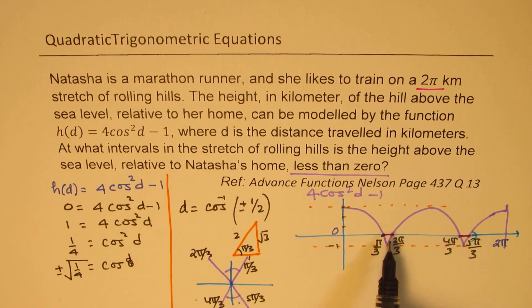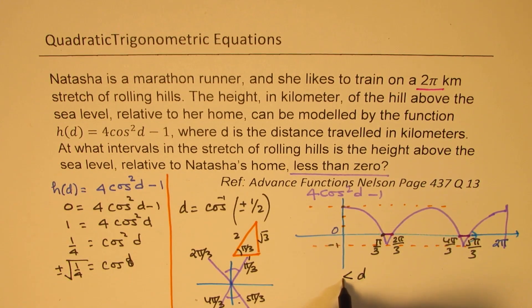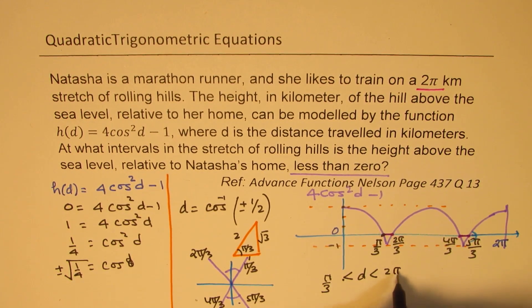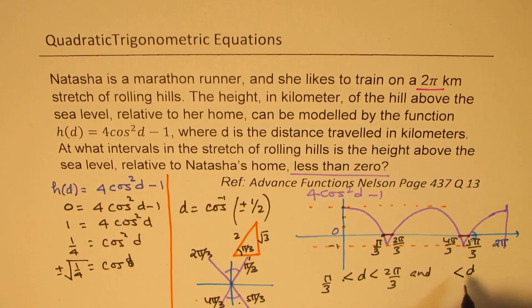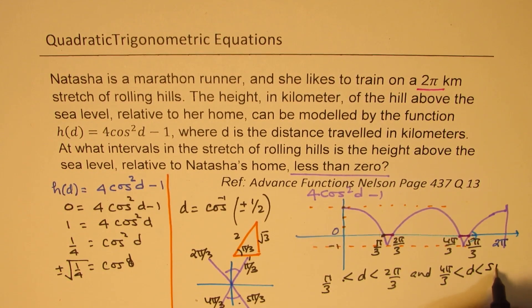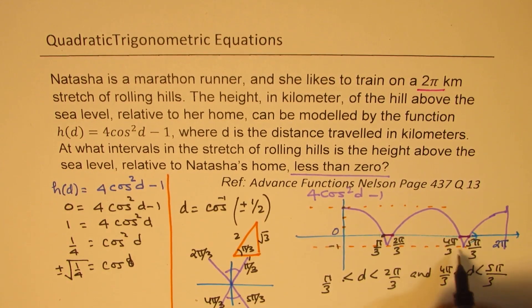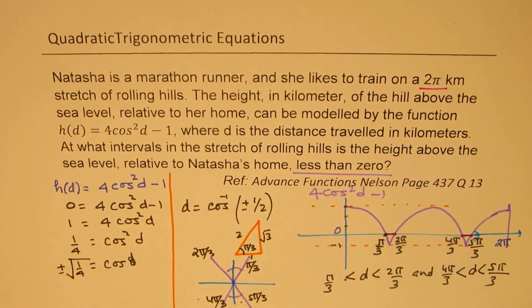So the answer will be that this distance d is when it is greater than π/3 and less than 2π/3, and when d is greater than 4π/3 and less than 5π/3. Is that clear to you? So these are the durations when the height will be less than the sea level. So that is how we are going to solve it.